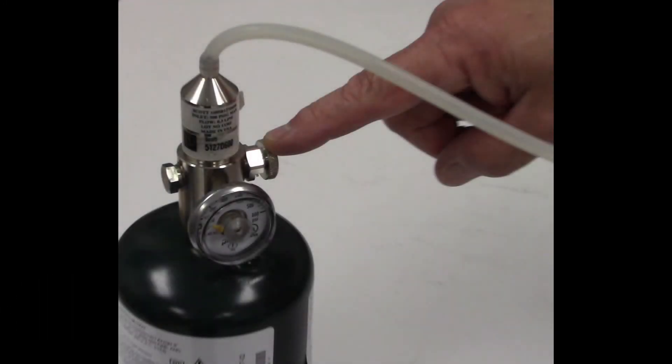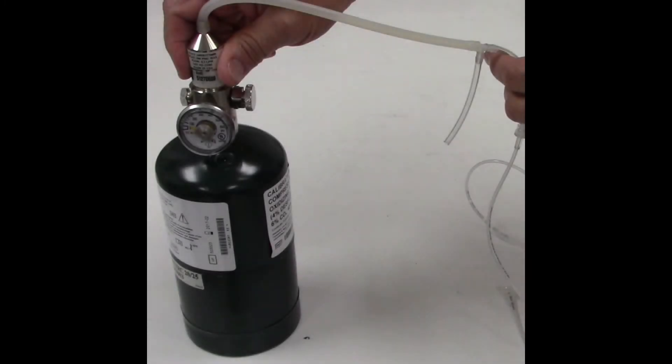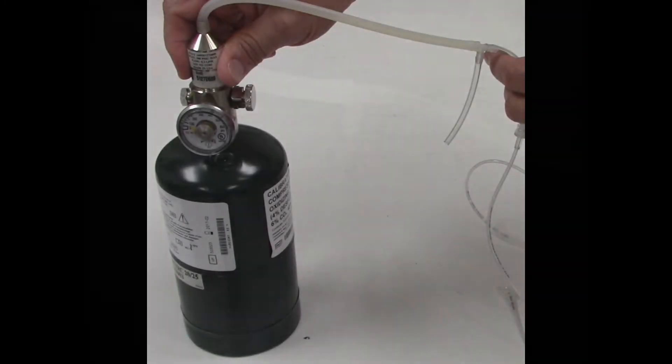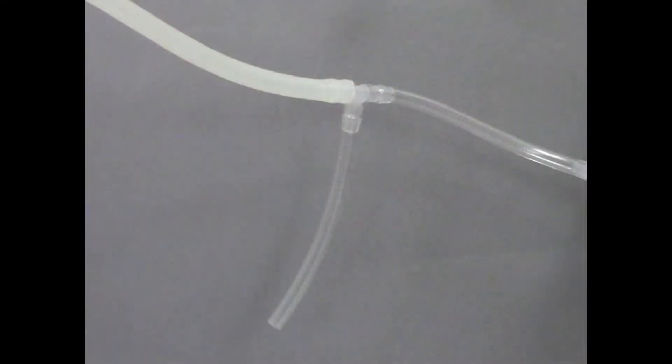To begin, ensure that the regulator is firmly connected to the calibration gas cylinder. Make sure that you have a T-fitting vented to atmosphere installed between the regulator tubing and the sample catheter which will attach to the gas module to be calibrated.